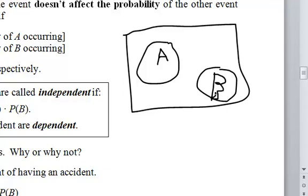Independence is different. Two events are independent if one event doesn't affect the other event's probability of occurrence.